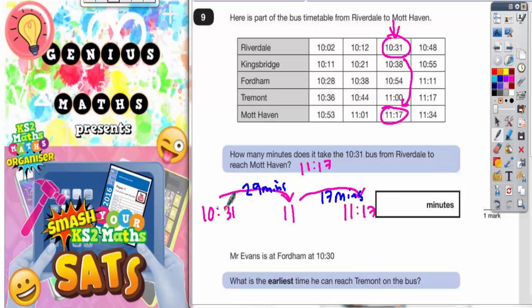So we've basically got for the total journey, we've got 29 minutes plus 17 minutes. Which we'll just work out up here, 29 plus 17. 9 plus 7 is 16, put down 6 and carry 1. 2 plus 1 is 3, plus 1 is 4. So the correct answer is 46 minutes.